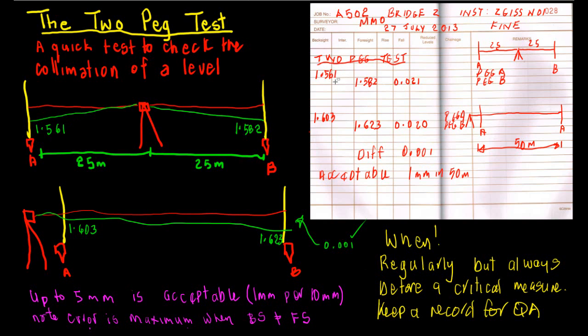We take a reading to A and a reading to B. So A is our backsight, B is our foresight, and we get a fall as it happens of 0.021 meters.